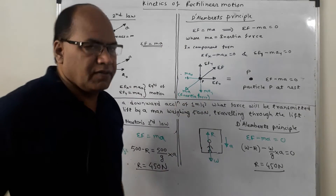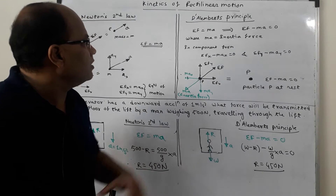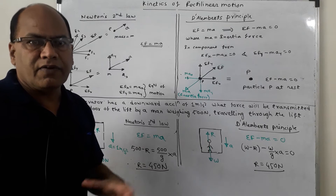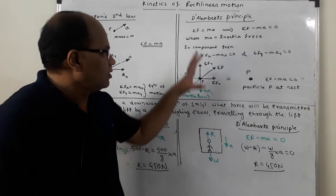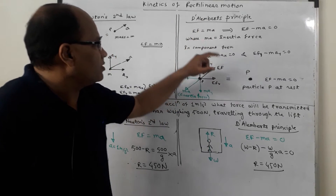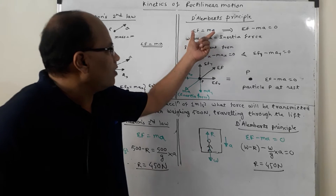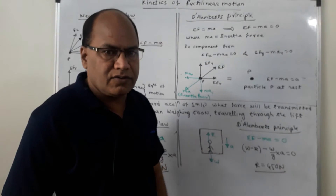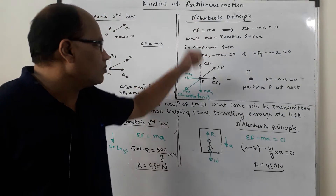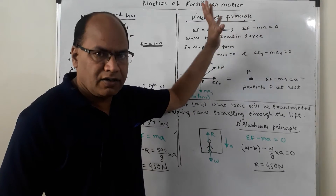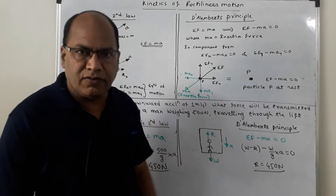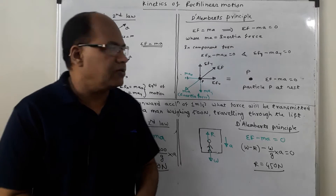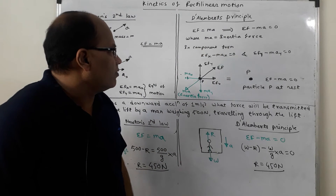Now, D'Alembert's principle. D'Alembert's principle and Newton's second law — we can solve the problem of kinetics using either one of these two concepts. As per D'Alembert's principle, ΣF = MA is Newton's second law. D'Alembert stated that ΣF − MA = 0. He simply brought MA to the left-hand side, that is, to the force side. So MA is called the inertia force. Inertia is the resistance offered to the change in state of the body, so MA is the inertia force.